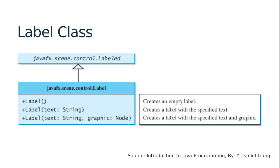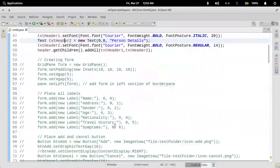Next is the Label class itself. Label already extends Labeled class, which means all those common properties are inherited. Apart from those properties, we have three different constructors: the first is a no-argument constructor which creates an empty label, the second has one parameter — the string you want to apply to the label, and the third has two arguments — the string and the graphic you want to have alongside your text. So let us create some labels in the form — we'll move back to the IDE.